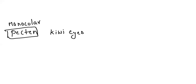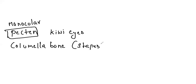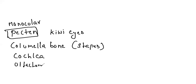External ears are present but ear pinna is absent. There is only one ossicle in the middle ear, called columella, which is a modified stapes. Cochlea is present in the inner ear but it is not coiled. Olfactory organs are less developed.